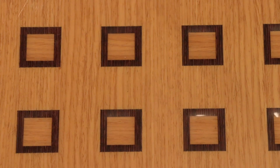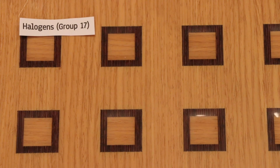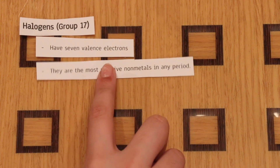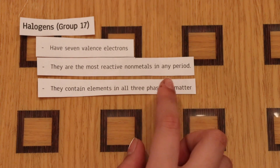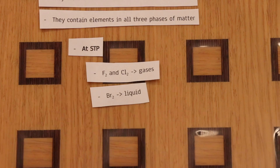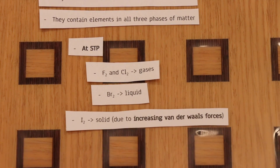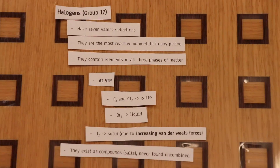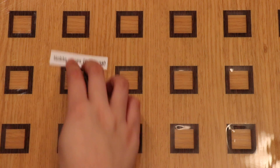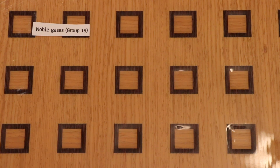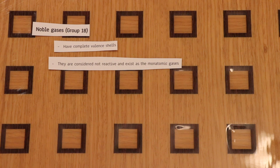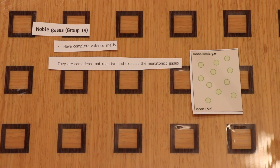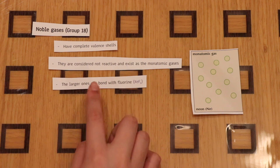Group 17, the halogens, have seven valence electrons and are the most reactive non-metals in any period. They contain elements in all three phases: at STP, fluorine and chlorine are gases, bromine is a liquid, and iodine is a solid due to increasing van der Waals forces. They exist as compounds or salts and are never found uncombined. Group 18, the noble gases, have complete valence shells — helium has two valence electrons, the rest have eight. They are not considered reactive, exist as monatomic gases, and the larger noble gases can bond with fluorine — for example, xenon hexafluoride.